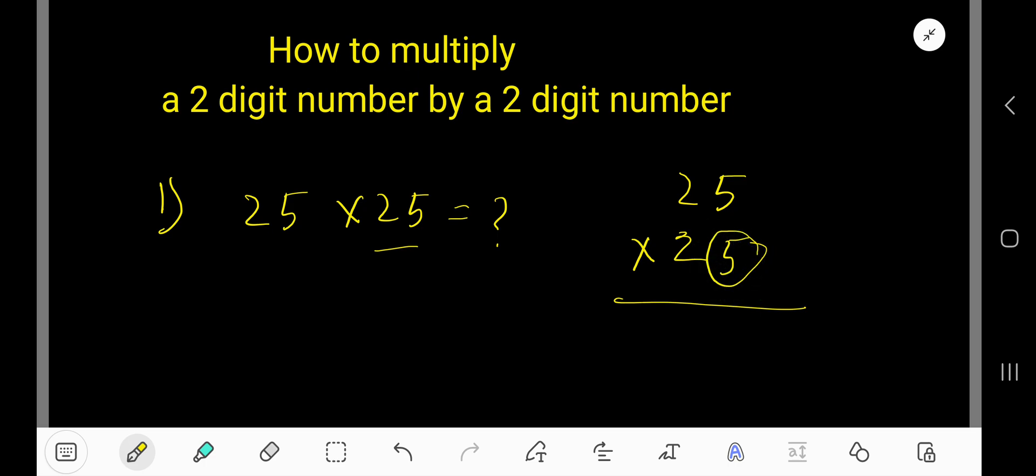Now five times five, which is 25. Write five and carry two over the next column. Right. Now five times two is ten, plus two is twelve. Write two here, one here.